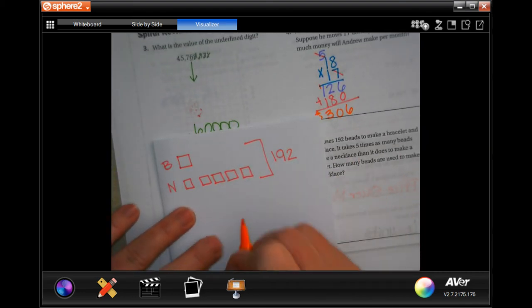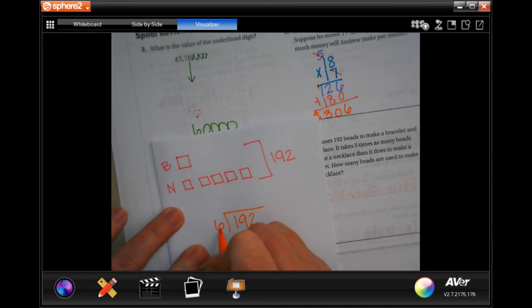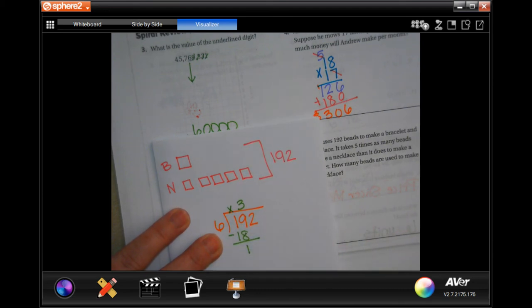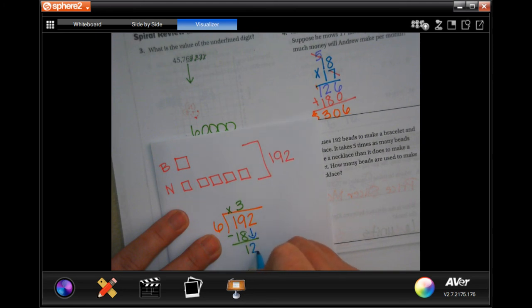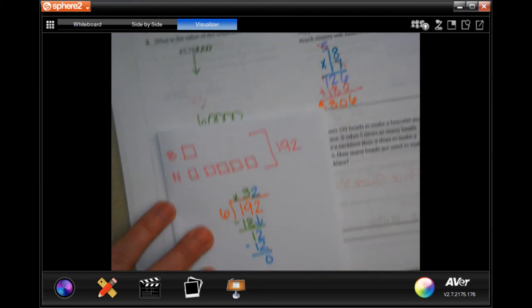We're going to take that 192 and we're going to divide it by how many boxes we have. Well, that's five plus one is six. So we're going to divide that by six. So six does not go into one. Six will go into 19 three times. Three times six is 18. Subtract. Get one. One is definitely smaller than six. So we can bring down our two and six will go into 12 two times. Two times six is 12. Nothing left over. We're good to go. So now that means that each one of these boxes is worth 32.